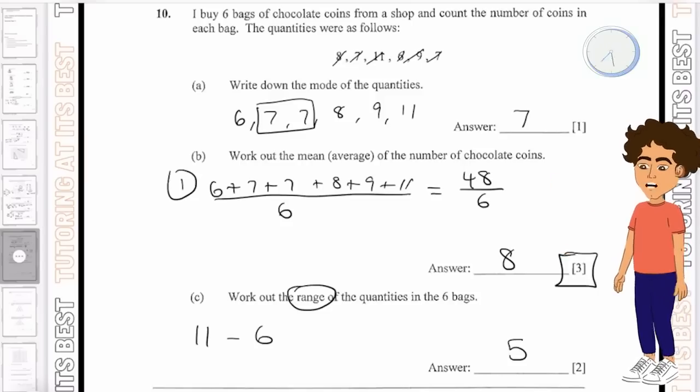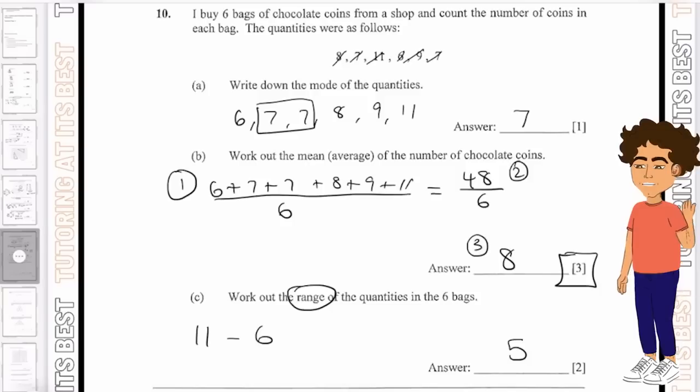Take a look at 10B for example, it's a three mark question. You can see that's one mark for the sum, the second mark for the division and the third and final mark for the answer. So it's absolutely pertinent that you go through each question concisely.